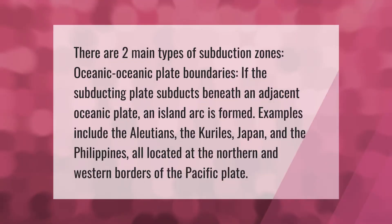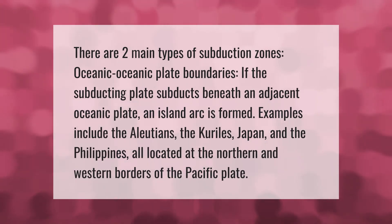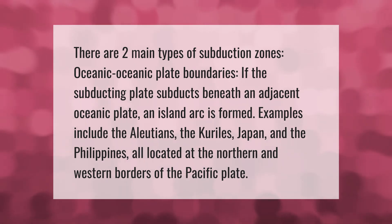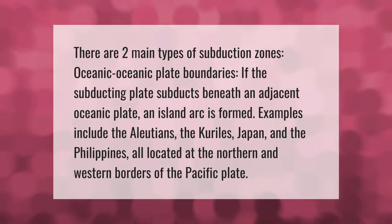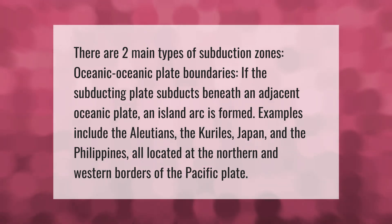There are two main types of subduction zones. In oceanic-oceanic plate boundaries, if the subducting plate subducts beneath an adjacent oceanic plate, an island arc is formed. Examples include the Aleutians, the Kurils, Japan, and the Philippines.